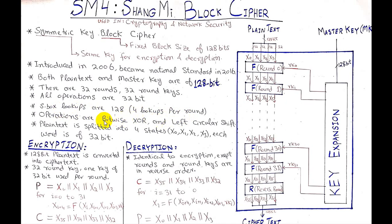The main operations performed in this block cipher are bitwise XOR and left circular shift - nothing else. Unlike AES, which uses Galois field multiplication or finite field multiplication, SM4 involves no finite field multiplication at all.